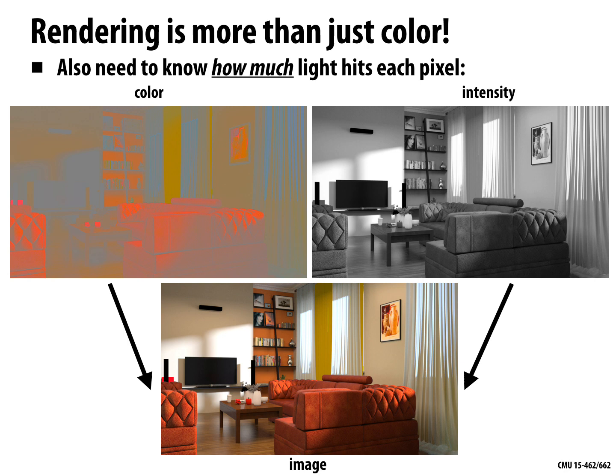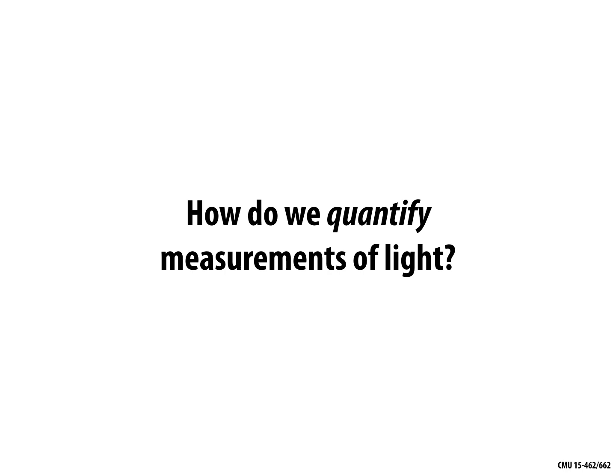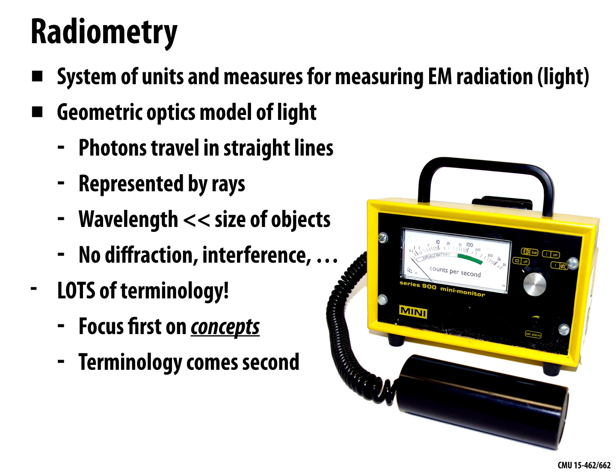That leads to a natural question: how do we quantify measurements of light? Radiometry is all about developing a system of units and measures for electromagnetic radiation. There are interesting phenomena at very small scales — quantum mechanical effects, diffraction, and so on — but for generating an image, we really only need a macroscopic model tuned for human perception. This is called the geometric optics model of light.